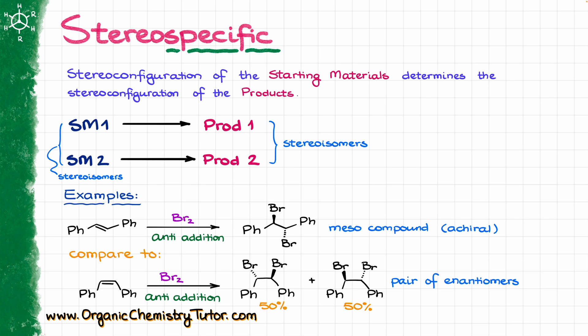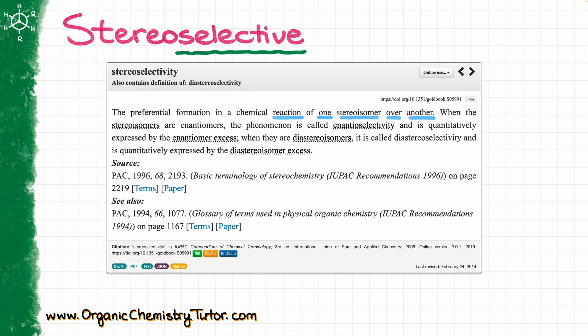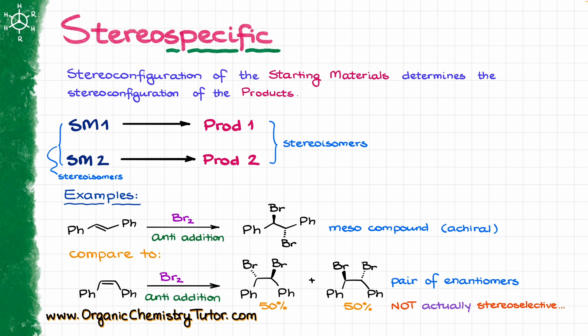I do want to point out that when it comes to our pair of enantiomers for the second reaction, we are going to end up with a 50/50 mixture — a racemic mixture. Based on the definition of the stereoselective reaction, this is actually not stereoselective. In the case of stereoselective reactions, one stereoisomer is preferred over the other, but here we have two stereoisomers produced in a 50/50 mixture with no excess of either. That's why I have a problem with the definition that says all stereospecific reactions are also stereoselective, because in this case we are not really having any stereoselectivity based on the strict definition.